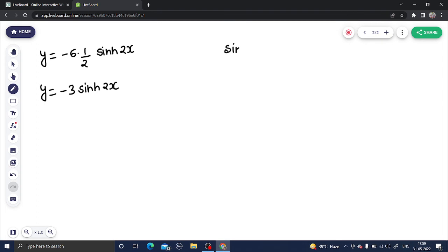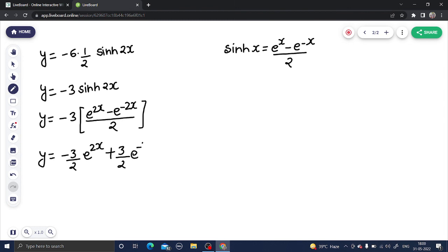You know that sinh(x) is (e^x - e^(-x))/2. The final solution will be (3/2)e^(2x) + (3/2)e^(-2x). This is your final solution.